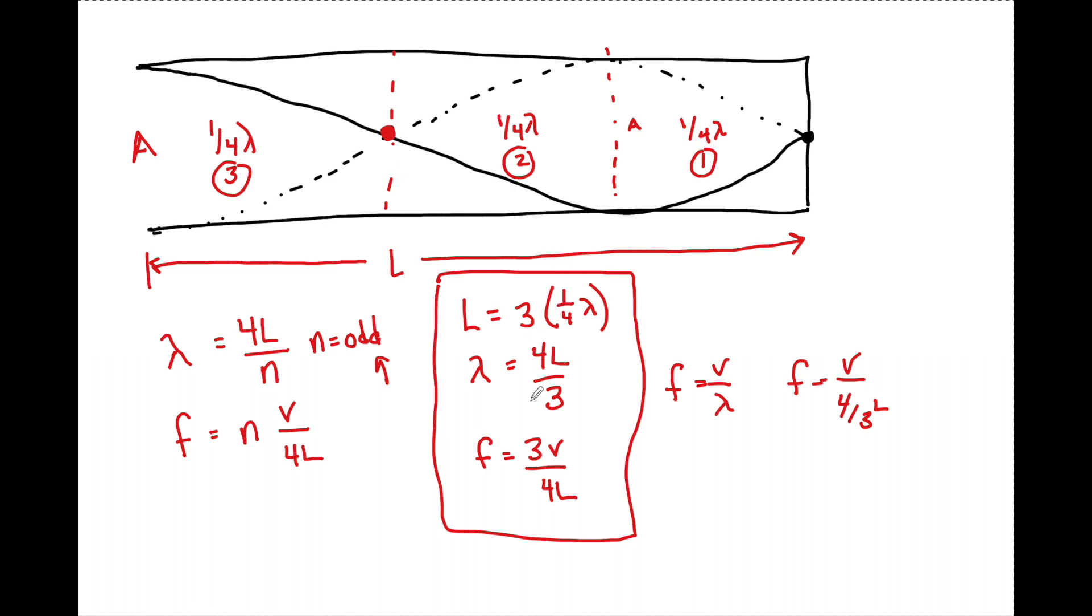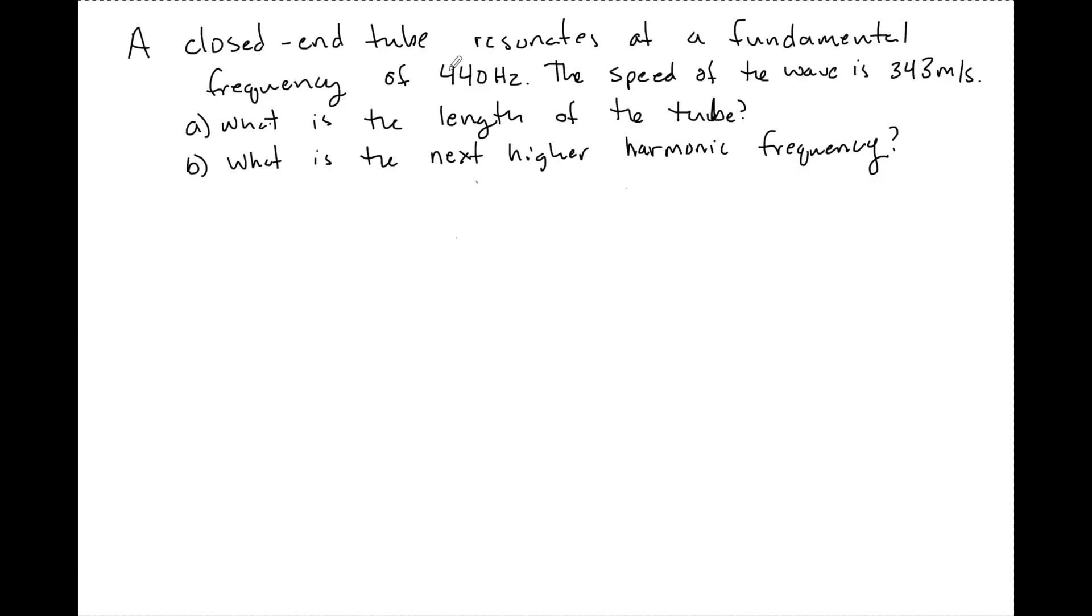A closed-end tube resonates at a fundamental frequency of 440 Hertz. The speed of this wave is 343 meters per second. What is the length of the tube? When they say fundamental frequency, what they're saying is N needs to be equal to one. We might want to go back to that first expression where L was equal to one quarter of a wavelength.